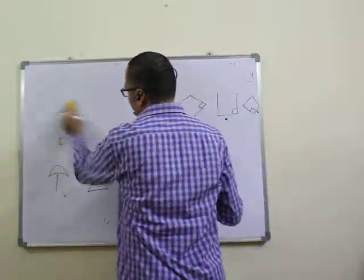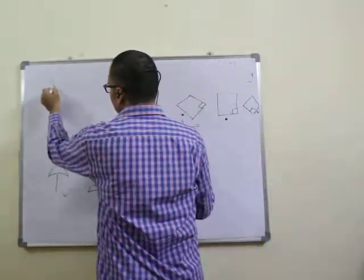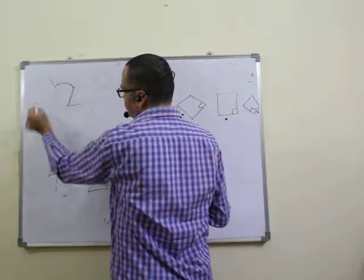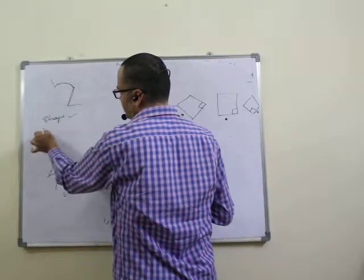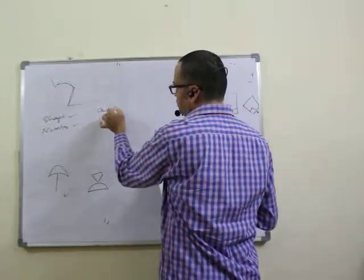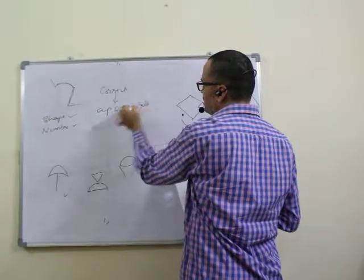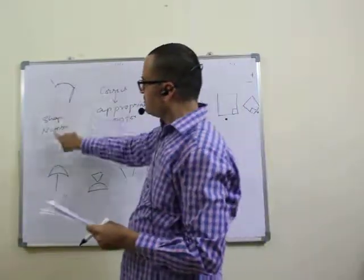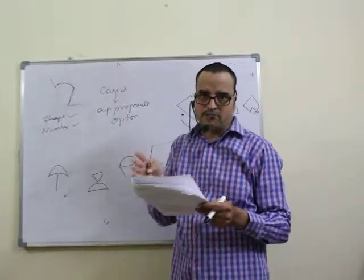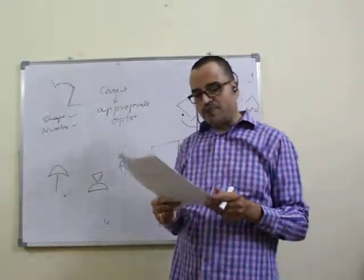Question twenty-four is about embedded figures. The question figure is given in outline form. Don't focus on size — focus on shape and number of lines. Count the curves: one, two, three, four. Searching the options, only the first one matches. So twenty-fourth question answer is first option.